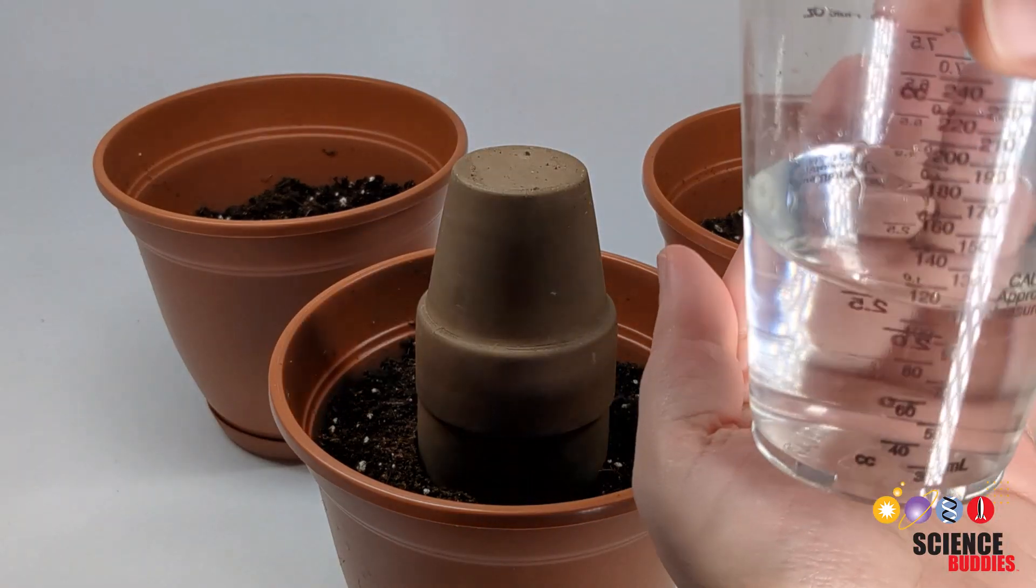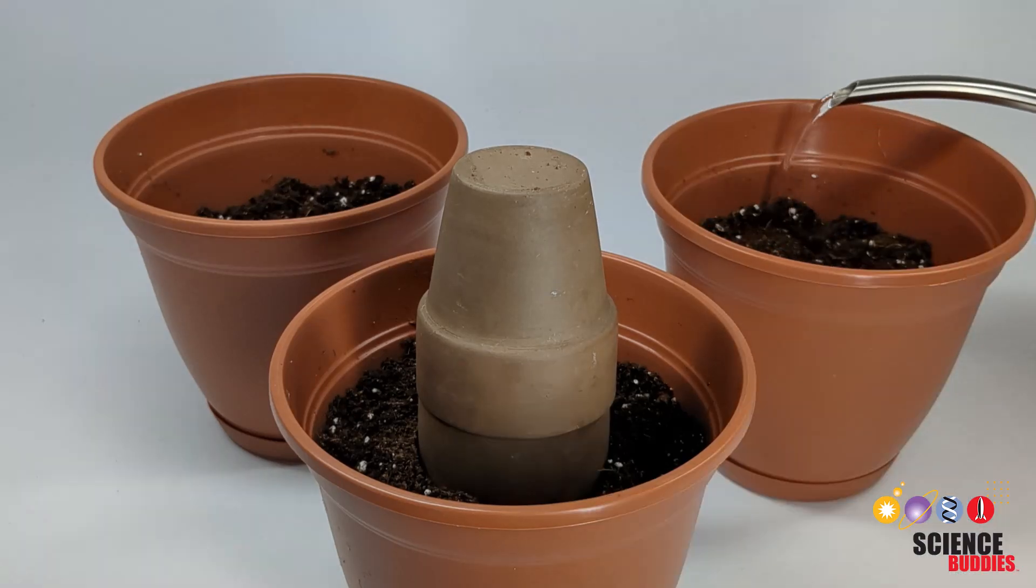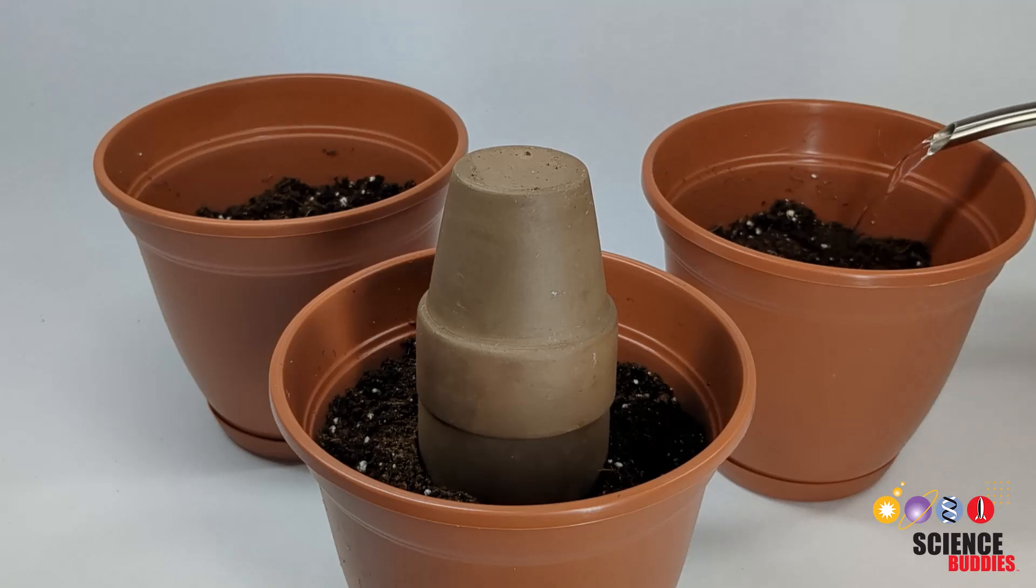You can also add the same volume of water to a watering can or cup to pour over the soil for the surface irrigation system. Take care to water into the center of the pot once each week.